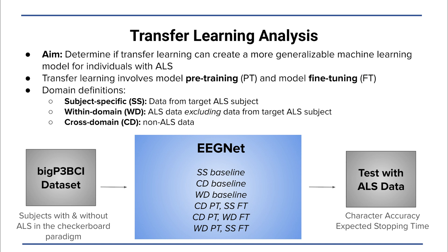Transfer learning involves pre-training to attain a baseline model and fine-tuning to specialize the model. In our case, we used a large, diverse P300 dataset that includes data from individuals with and without ALS.